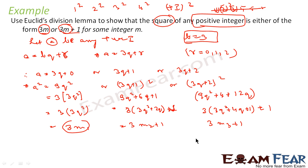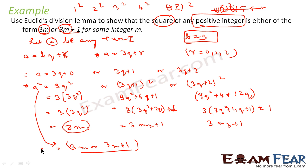So if you see the pattern: the first is 3m where m equals 3q²; the second is 3m plus 1 where m equals 3q² + 2q; and the third is 3m plus 1 where m equals 3q² + 4q + 1. It is either 3m or 3m plus 1 for some integer m. Hence, using Euclid's division lemma, we have proved that a² — the square of any positive integer — is always of the form 3m or 3m plus 1.